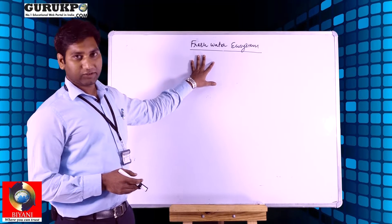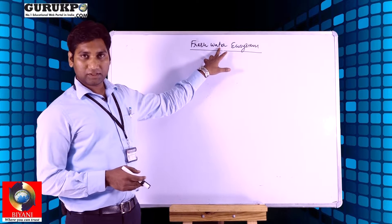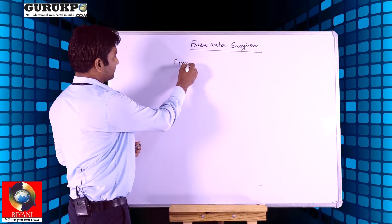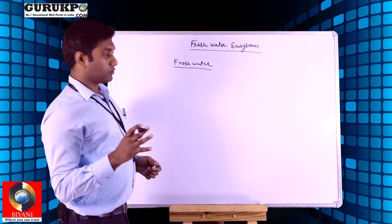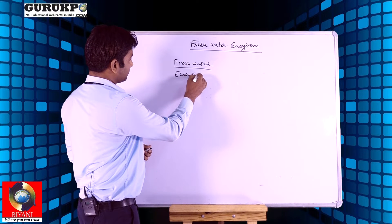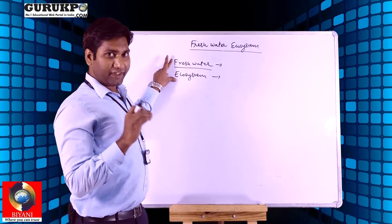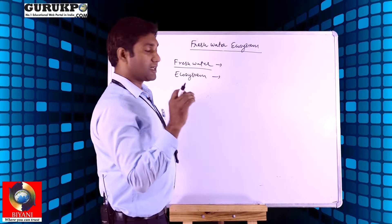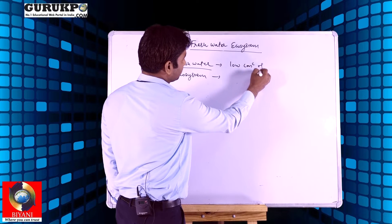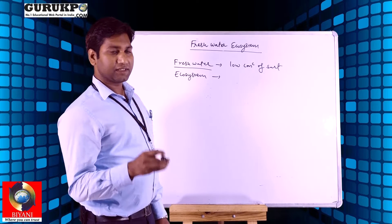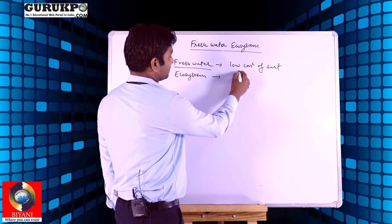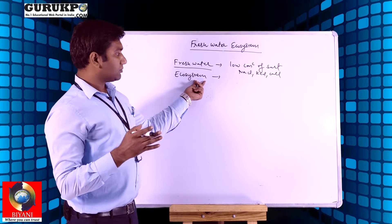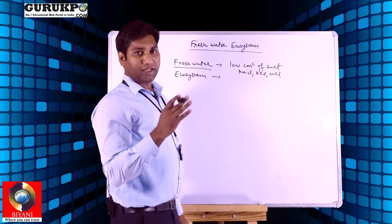First of all, we need to know about the freshwater ecosystem. There are two terms: one is 'fresh water' and another is 'ecosystem.' Fresh water means water having a low concentration of salts, such as NaCl, CaCl₂, KCl, and others.